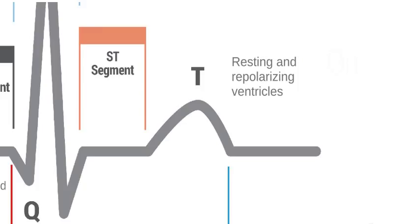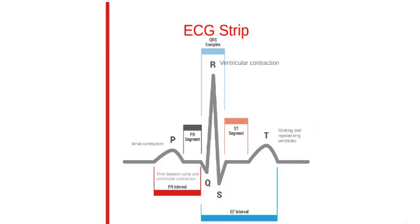Following ventricular contraction, the ventricles rest and repolarize, which is registered on the ECG strip as the T wave. The atria repolarize also, but this coincides with the QRS complex and therefore cannot be observed on the ECG strip.